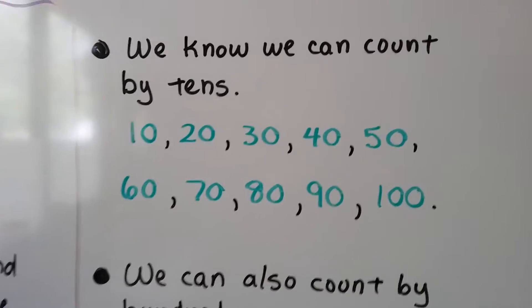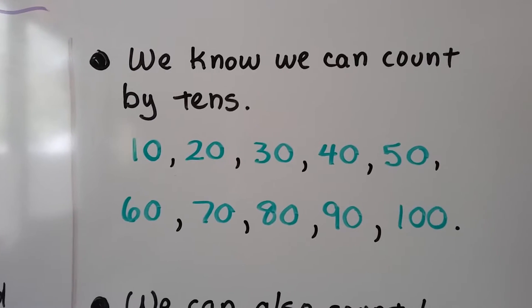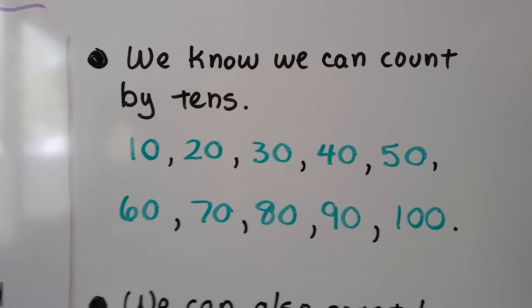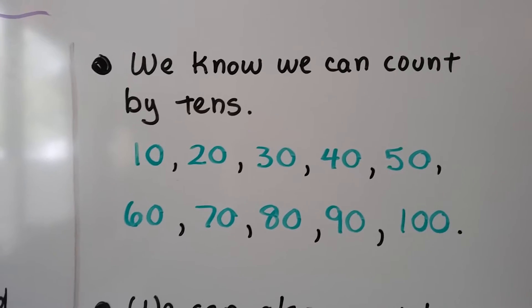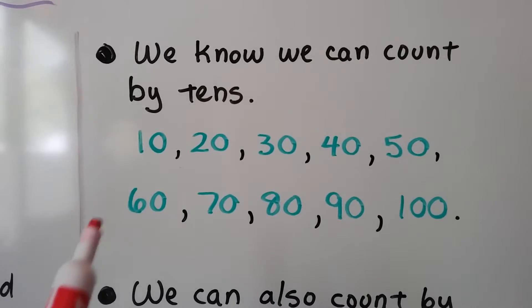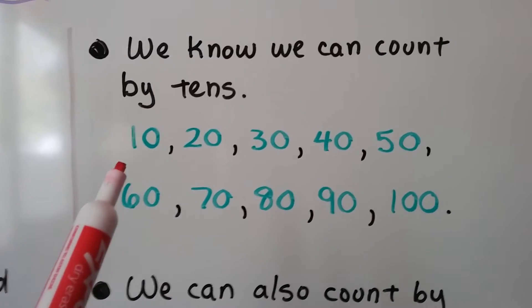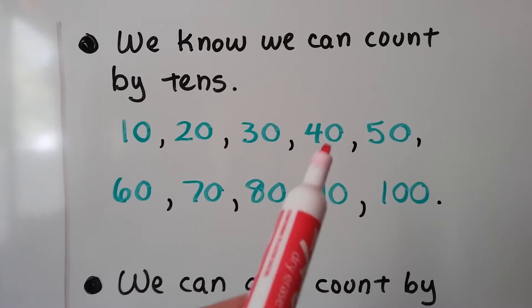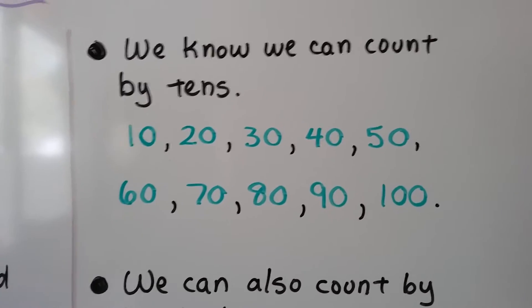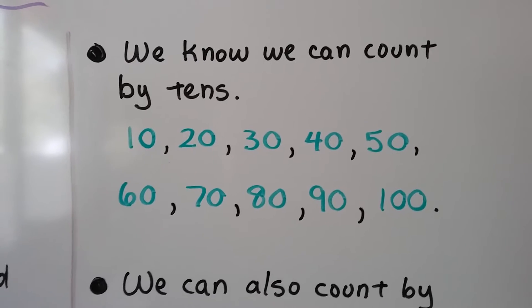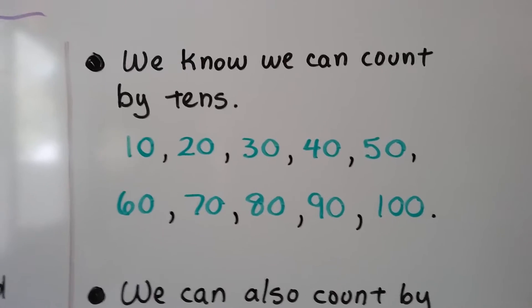We know we can count by tens. 10, 20, 30, 40, 50, 60, 70, 80, 90, 100. Can you see the pattern? There's a zero in the ones place for all of these, and the numbers just count: 1, 2, 3, 4, 5, 6. See? It just counts up. And 10 tens will make a hundred.